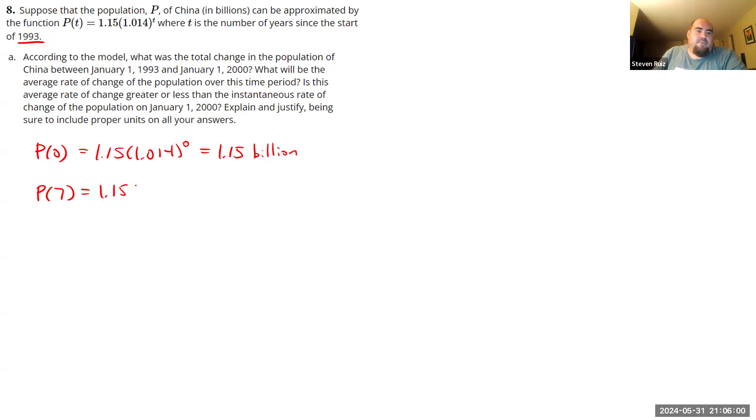And when P equals 7, so let's calculate that. I get approximately 1.27 billion. Okay, so we got the two population values. What else do we have to do with them?